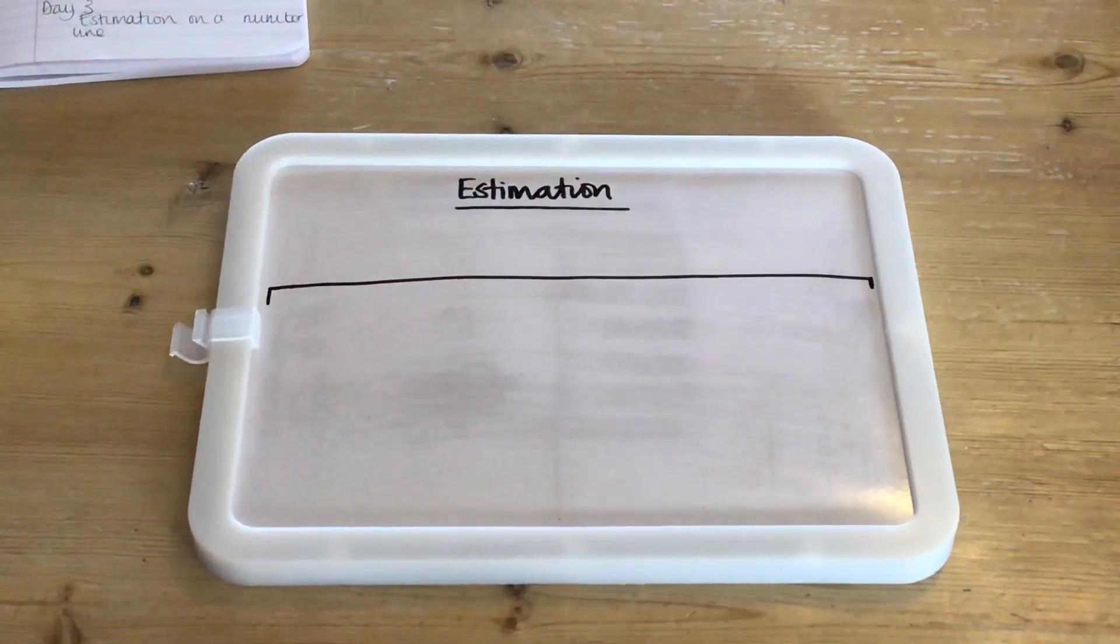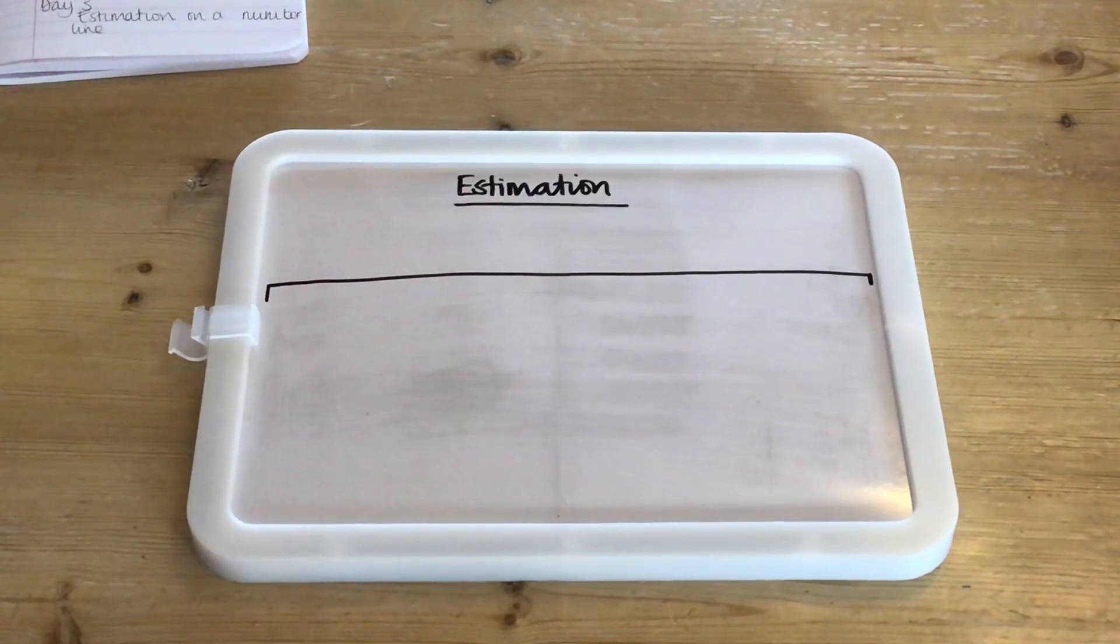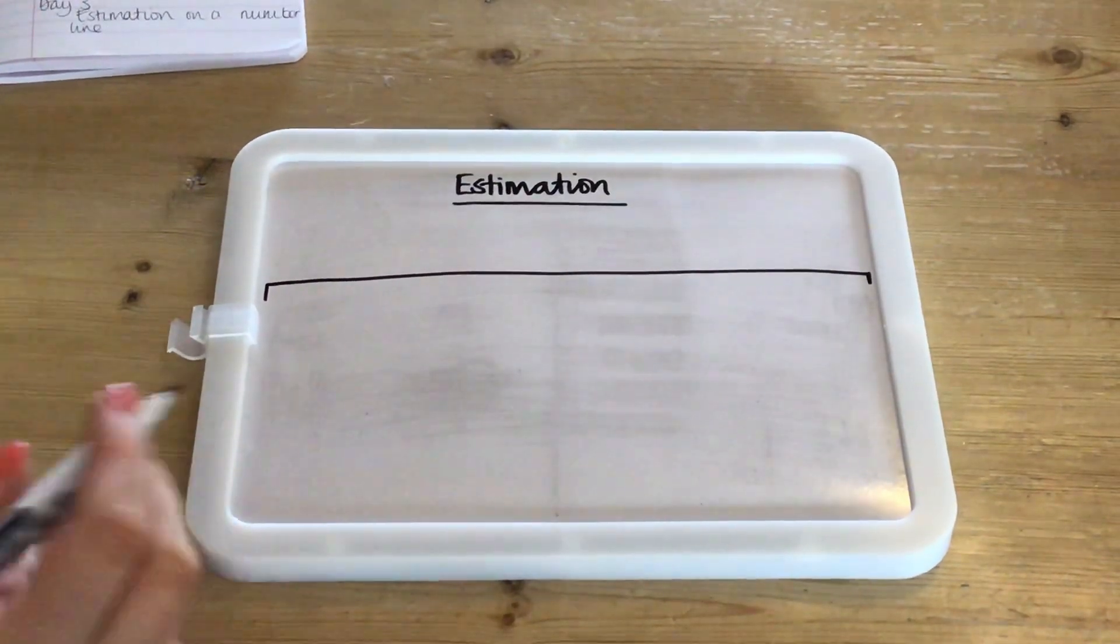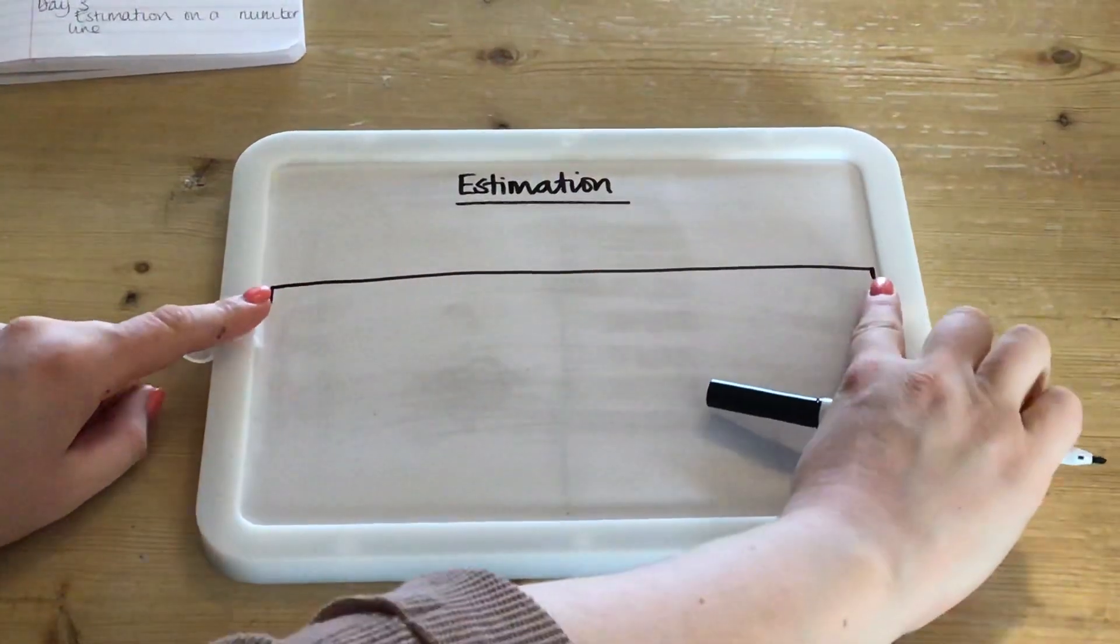Today we're going to look at estimation and particularly on a number line. When you are estimating on a number line you need to have a range. That means what goes at the beginning and what goes at the end.